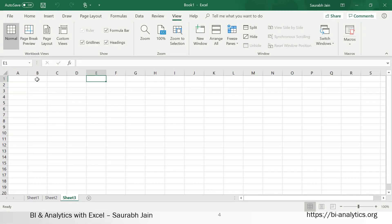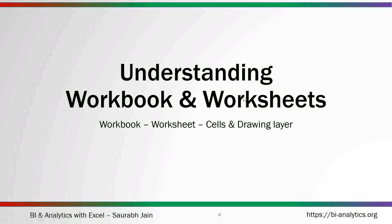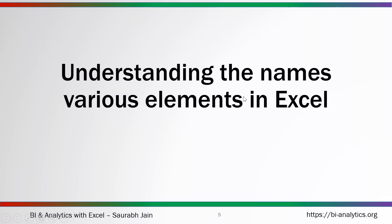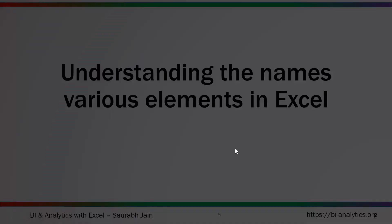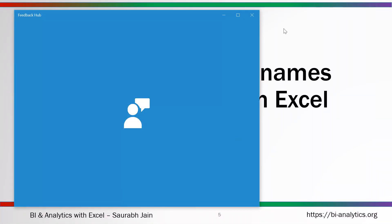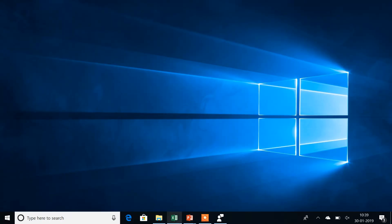Then we have cells. In a sheet there are cells — right now I am in E1, then E2 — these are called cells. We need to understand the terminologies used in Excel, because as we take the class further I will be saying things like 'ribbon' or 'task pane', so you should know what these elements are. Let's move around the various options.